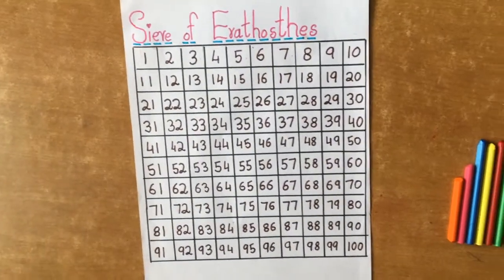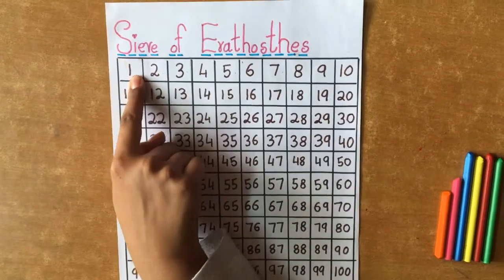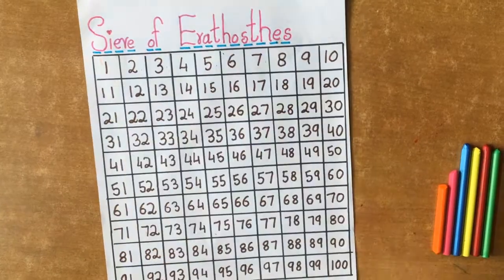Now we are going to mark the numbers. First we will mark 1 as it is not a prime number nor a composite number.